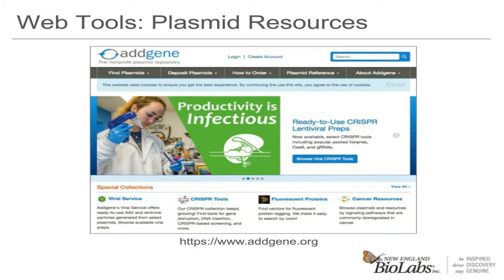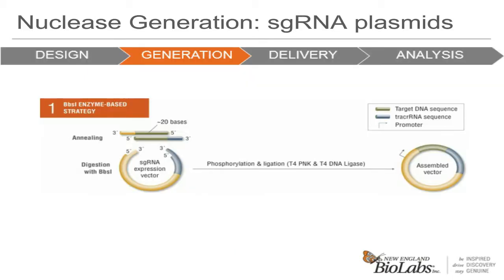Now we're going to switch to making sgRNA plasmids. We're going to talk about several different ways to generate sgRNA-expressing plasmids. Many of these methods can also be used to generate sgRNA transcription templates.